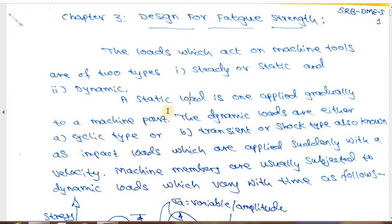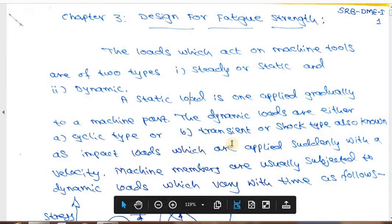There is another kind of load called dynamic load, in which we have two categories: one is called a cyclic type of load and another is called a transient or impact type. This impact type of load we have already covered as impact stress, because the impact type load is one that is applied all of a sudden onto the machine components, causing instantaneous stress, otherwise called impact stress.